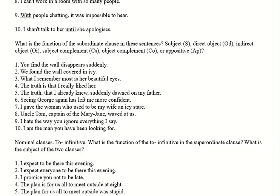Number five: 'the truth that I already knew suddenly dawned on my father.' We've got 'the truth dawned on my father' as a simple construction, and then 'that I already knew.' 'I knew' is another verb form. 'That I already knew' is the description of the truth, but it's not a description brought about by a verb — so it's not a complement. It's a description thrown in as extra information. It's in commas — you could remove it. So this is an appositive, which as I said in the lecture, is the easiest thing to identify.